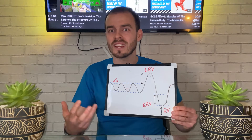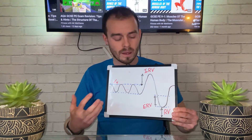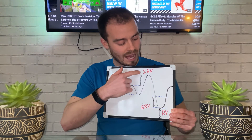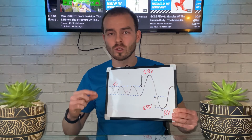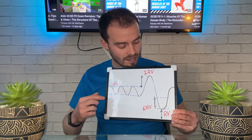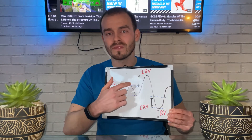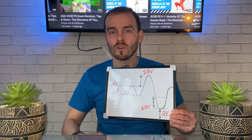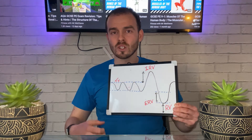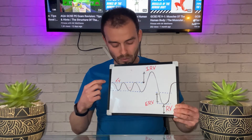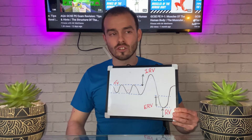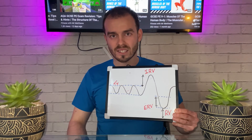During exercise, as tidal volume increases because we're breathing in more, our reserve volumes decrease — because there's less reserve volume available as we've eaten into it by breathing more forcefully during exercise.